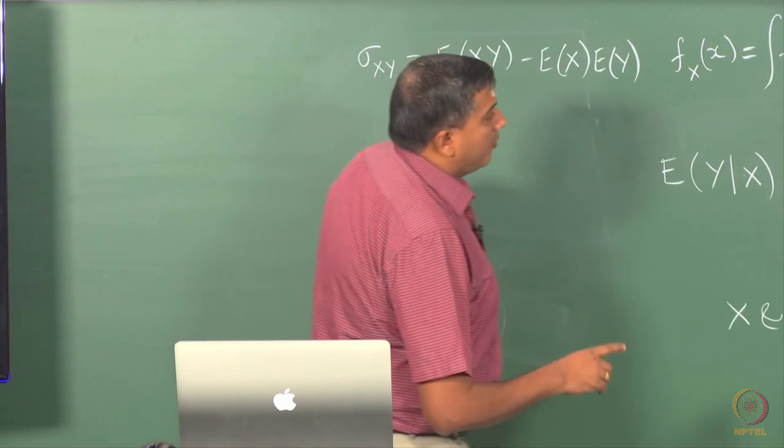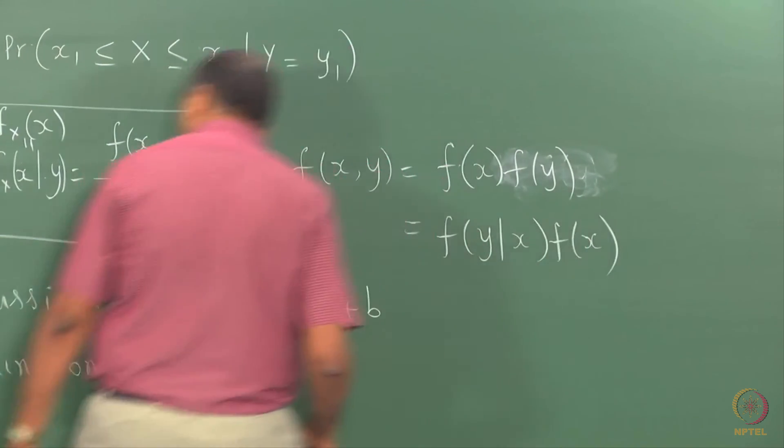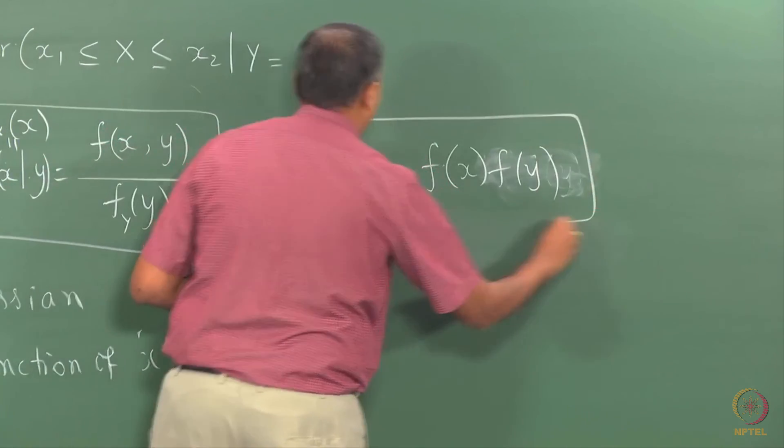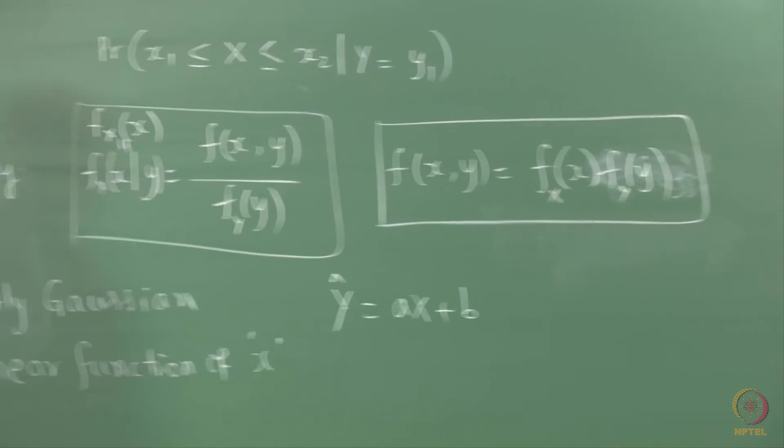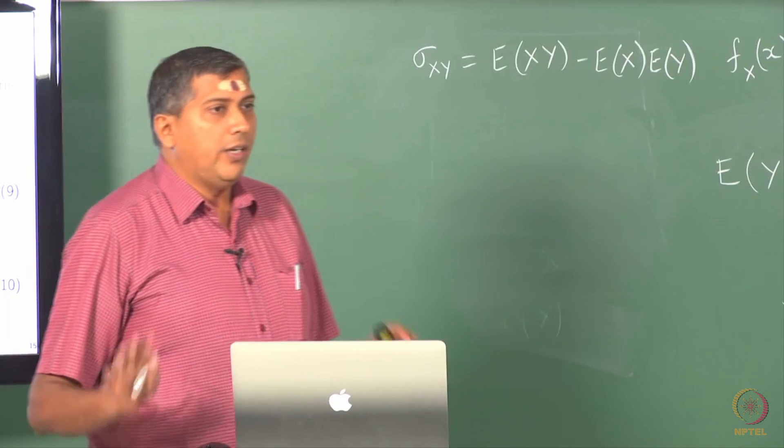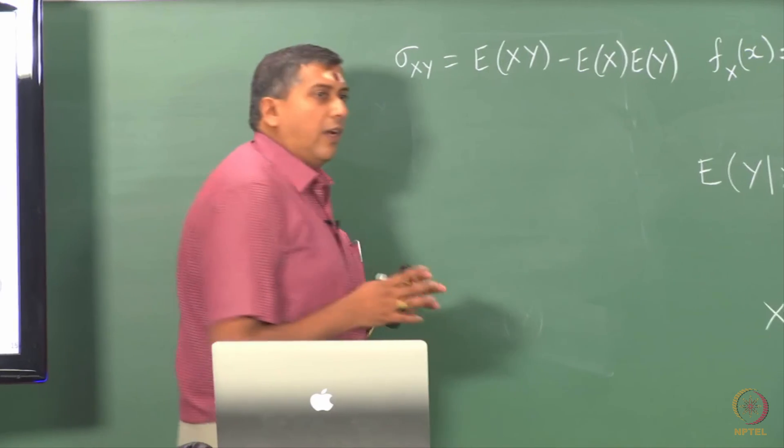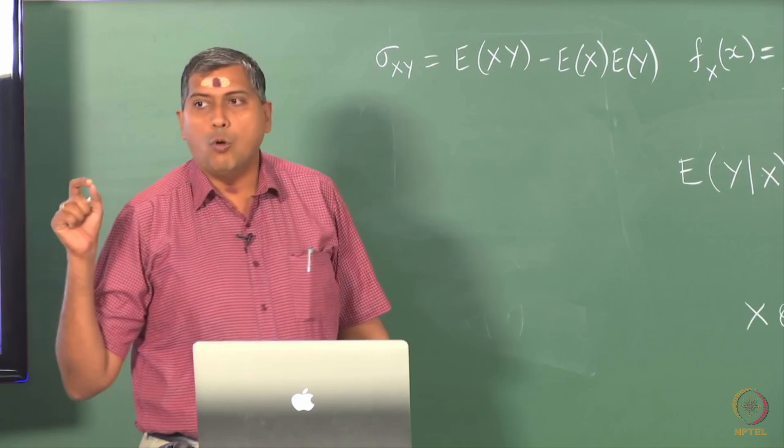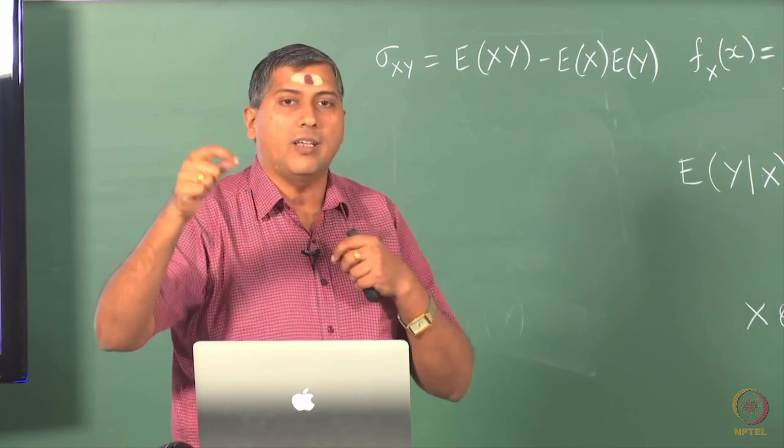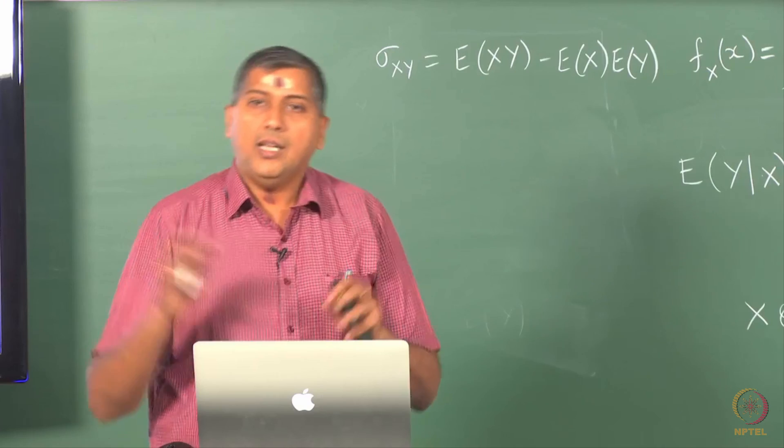We said independence is when f of x, y is simply f of x times f of y. Now let us look at uncorrelatedness. This is what is independence, and as I said strictly speaking, you need to have the marginals there. Suppose x and y are uncorrelated. We have not introduced correlation, but you can think of correlation as a standardized measure. Two variables are uncorrelated if the covariance between them is 0. Remember covariance implicitly has a name co-varying. We are measuring whether x and y, the variation in x and y, the spread in x and y are related. If x moves in this way, is it affecting y and vice versa.